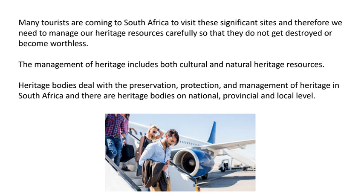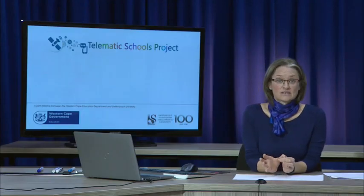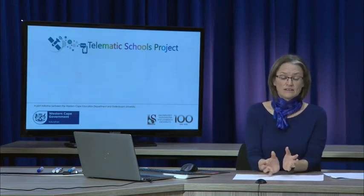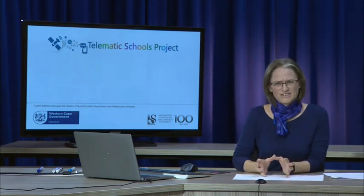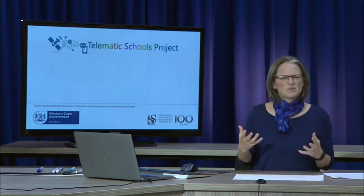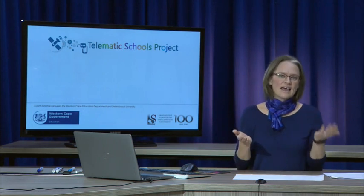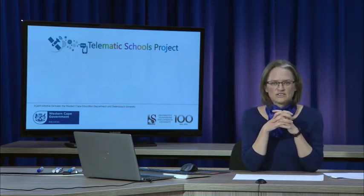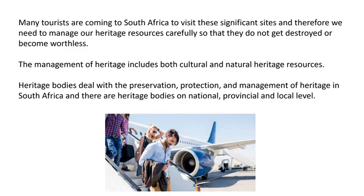Many tourists come to South Africa to visit significant sites, so it's really important that we manage our heritage resources carefully so that they don't get destroyed or become worthless. The management of heritage sites includes both cultural and natural heritage — not just buildings but also natural sites of significance. For example, Table Mountain in Cape Town is a natural heritage site, not a cultural heritage site. There are different heritage bodies that deal with preservation, protection, and management of heritage in South Africa, and this happens at three levels: national, provincial, and local.